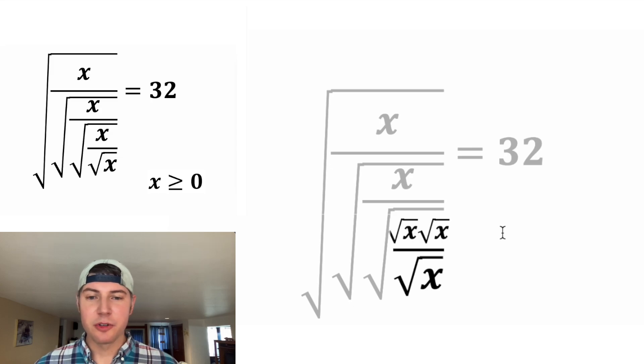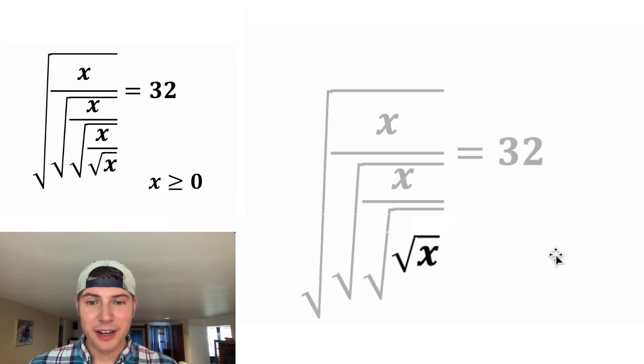This x in the numerator can be broken out into square root of x times square root of x. Now these two square root of x's match, so they can cancel each other out. And now we're stuck with just the square root of x.